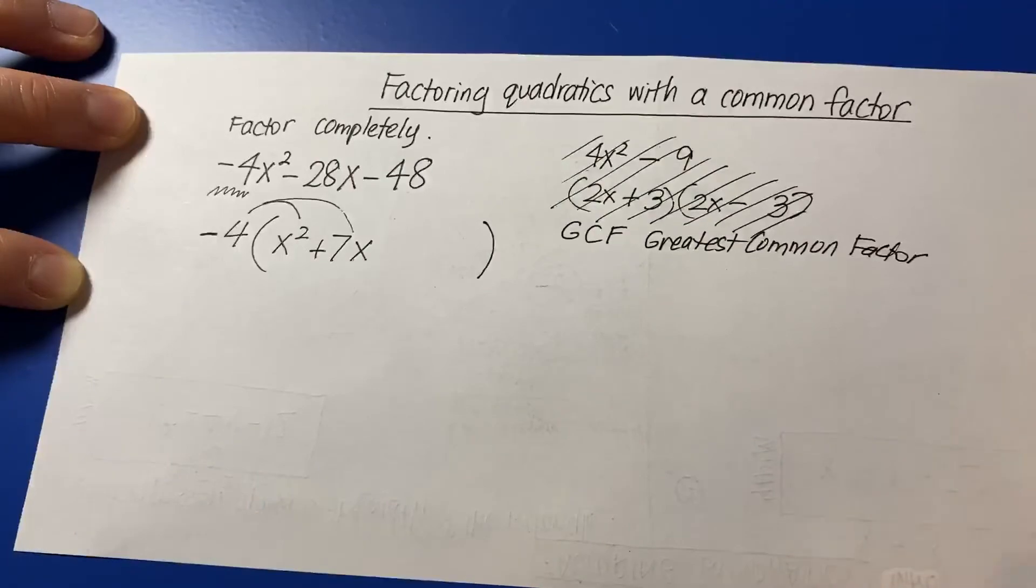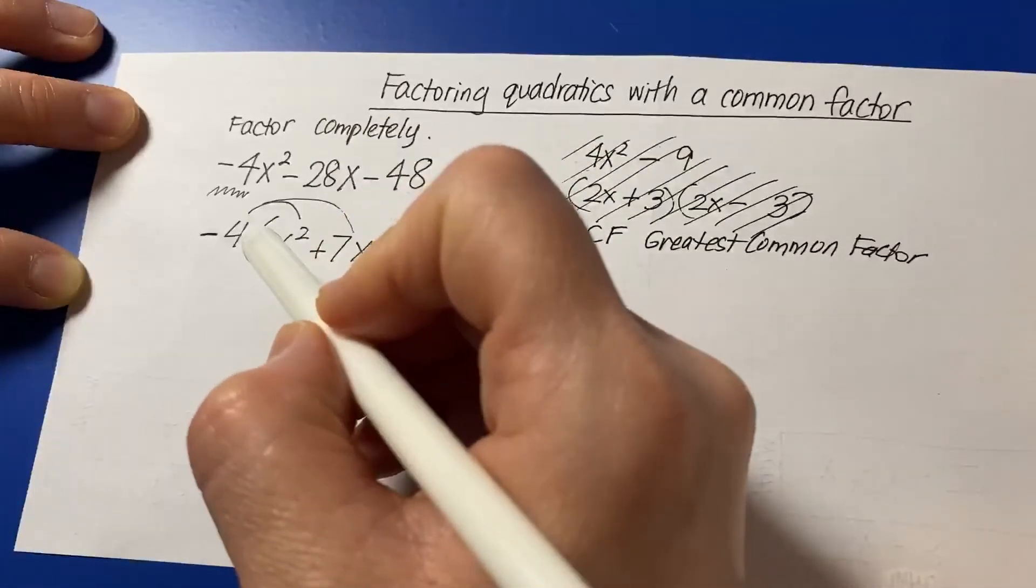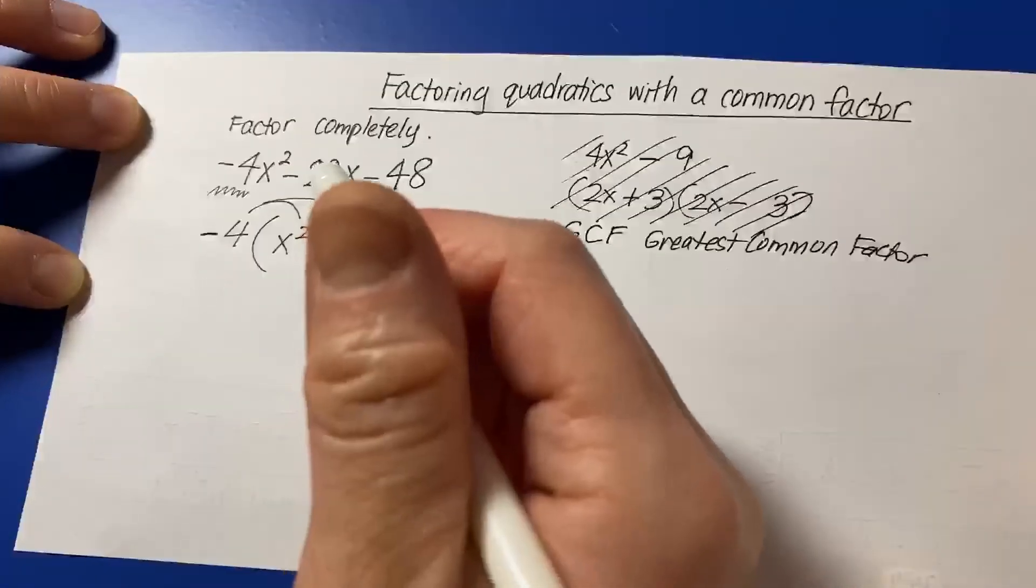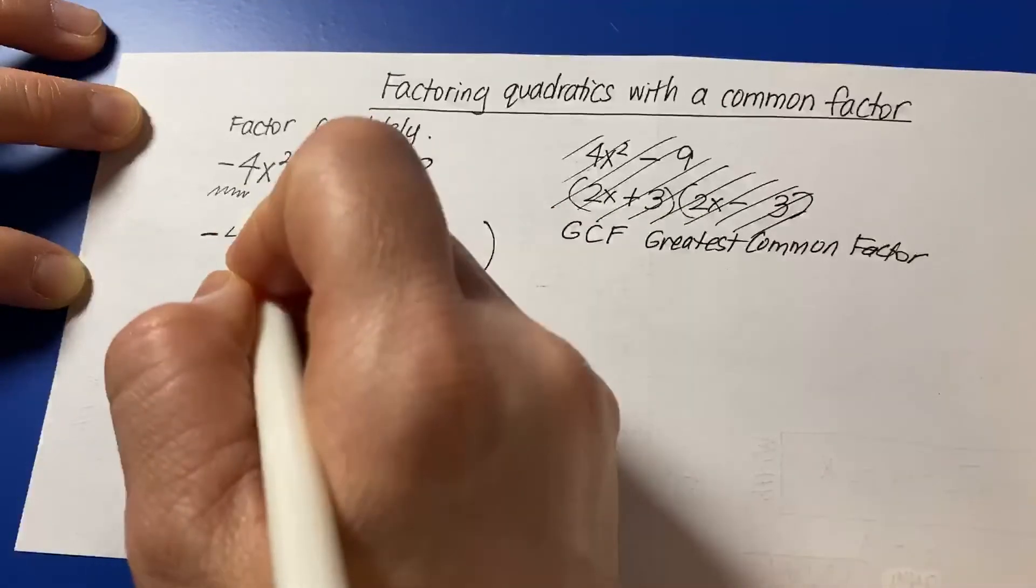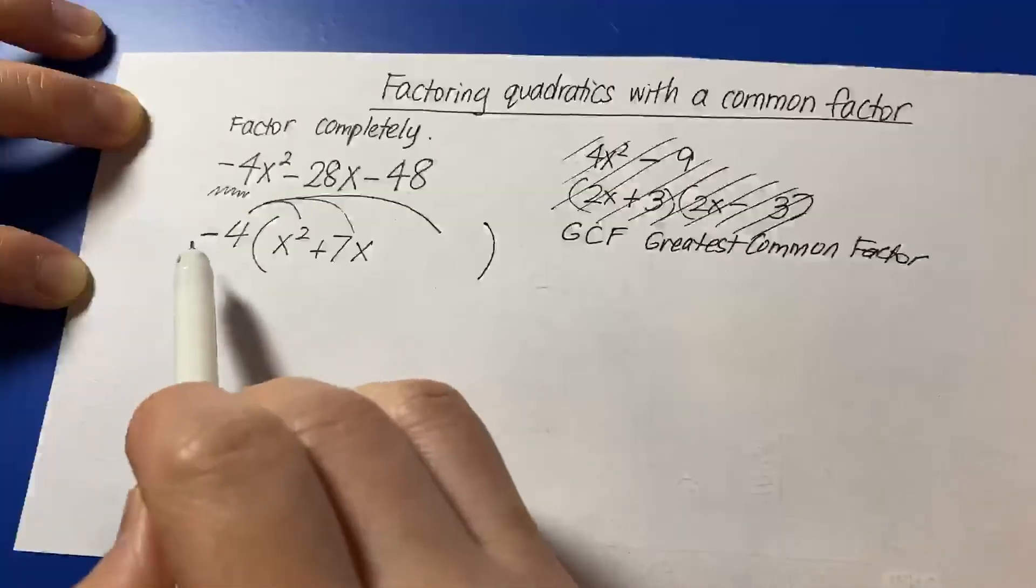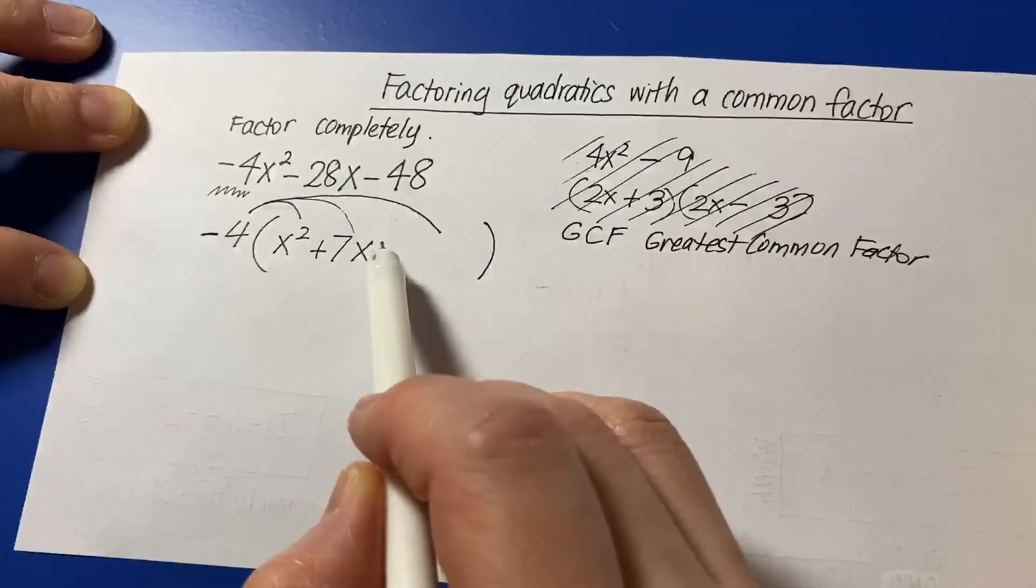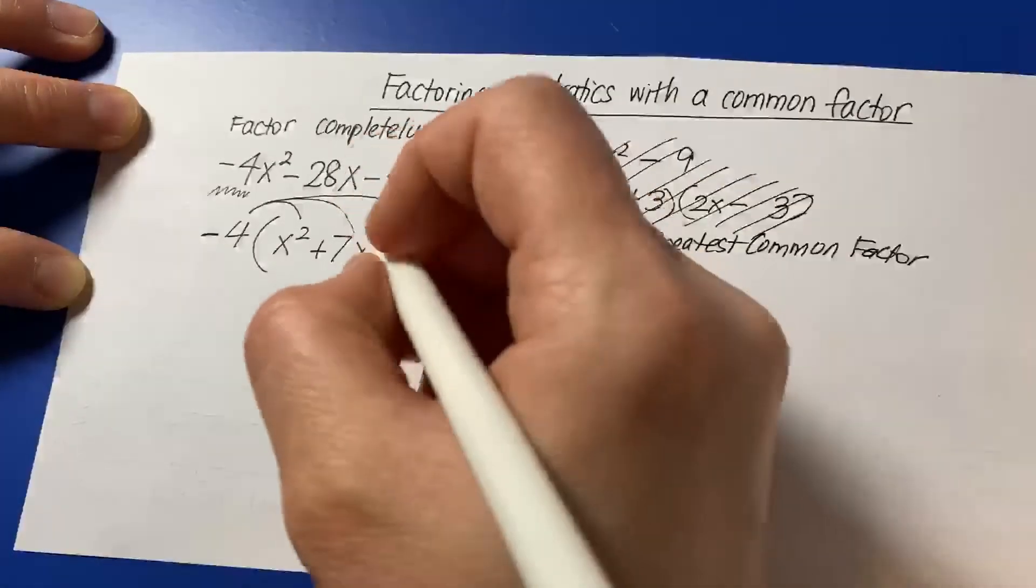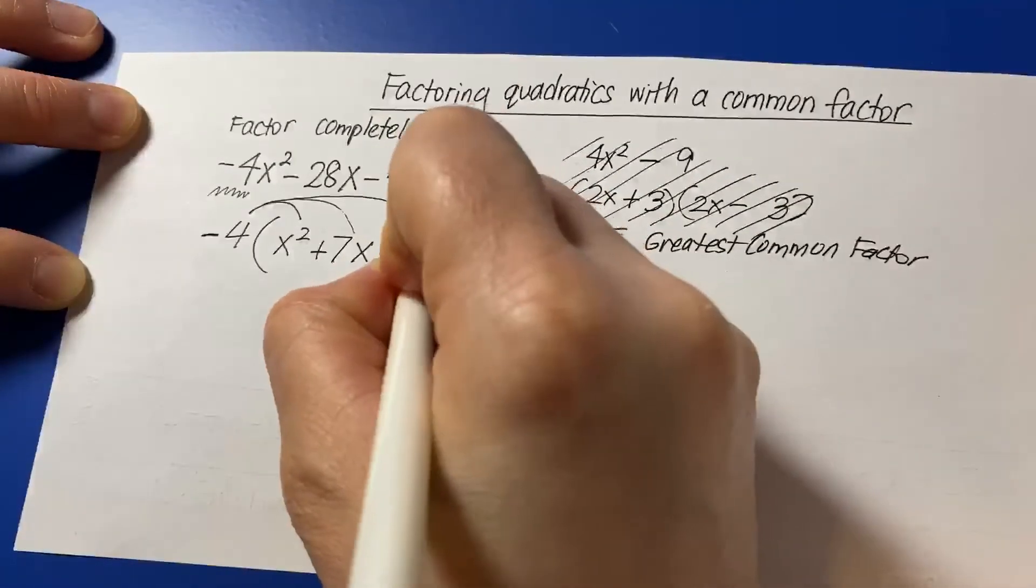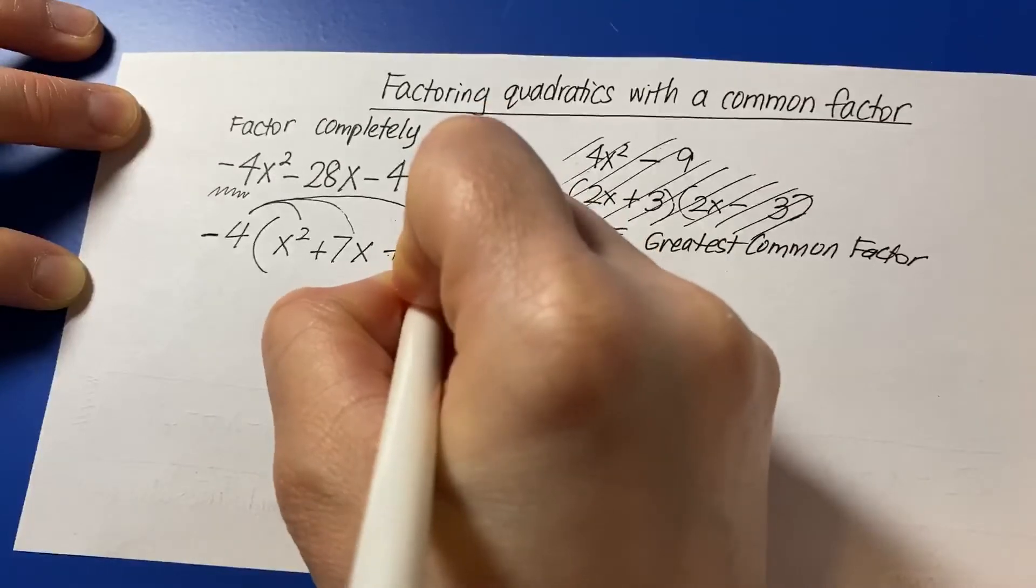Make sure you're very careful with your signs. One little sign error, the whole thing goes kablooey. Now, negative 4 times what gives you negative 48? And that would be positive 12.